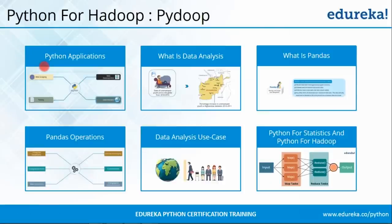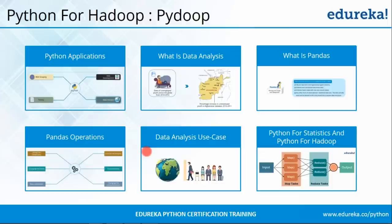To summarize, first we saw various applications of Python — web scraping, data analysis, testing, and more. Then we saw what data analysis is and what Pandas is. We understood various Pandas operations like slicing, joining, and merging. Then we saw a case study with a dataset of the percentage of unemployed youth country-wise between 2010 and 2014, and found the percentage change between 2010 and 2011. Finally we saw how to use Python for statistics and how to use Python with Hadoop.